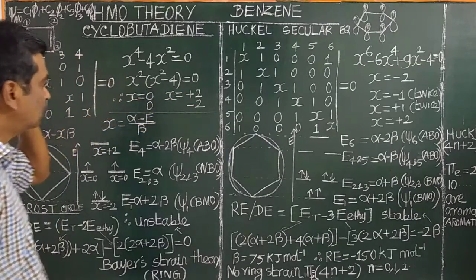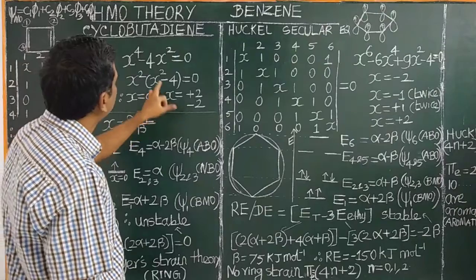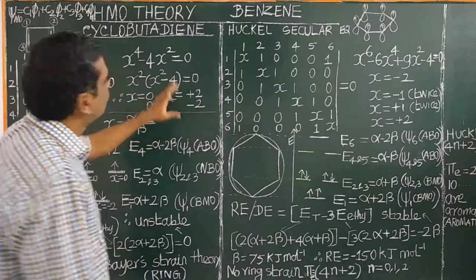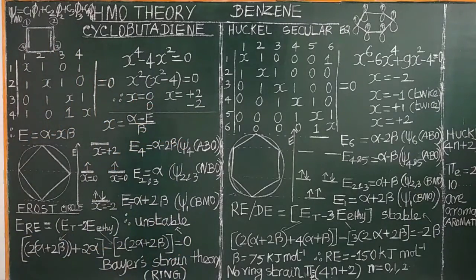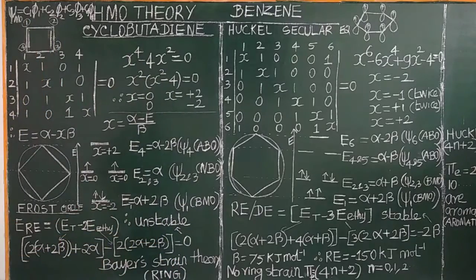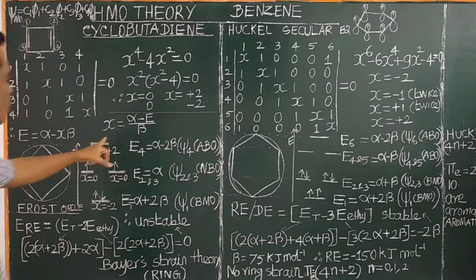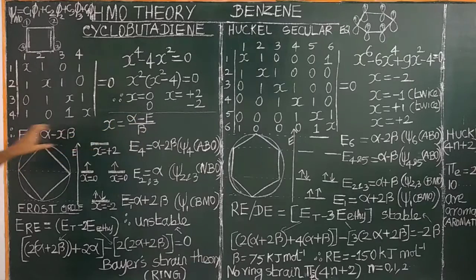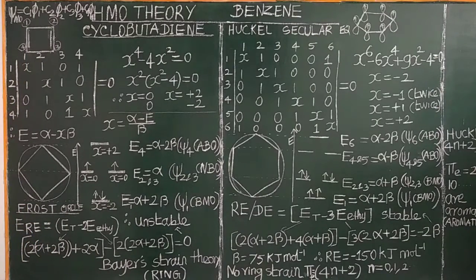If x² equals 4, then x equals plus or minus 2. There are 4 solutions because it is a 4th power equation, giving 4 energy levels. The lowest energy corresponds to x equal to minus 2.